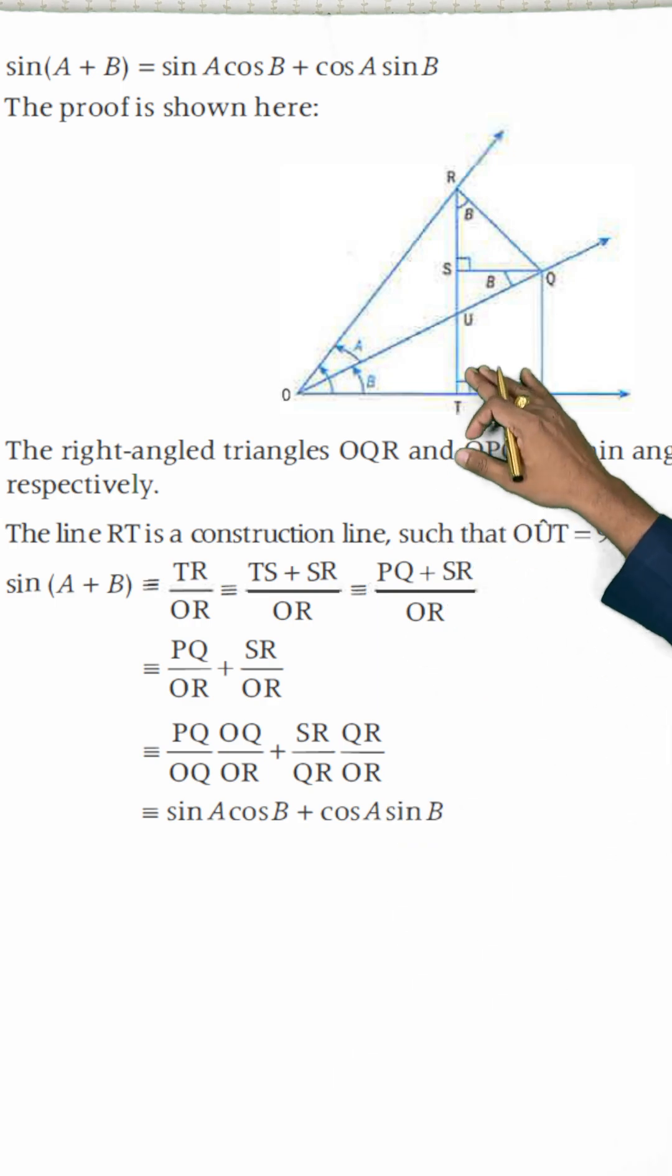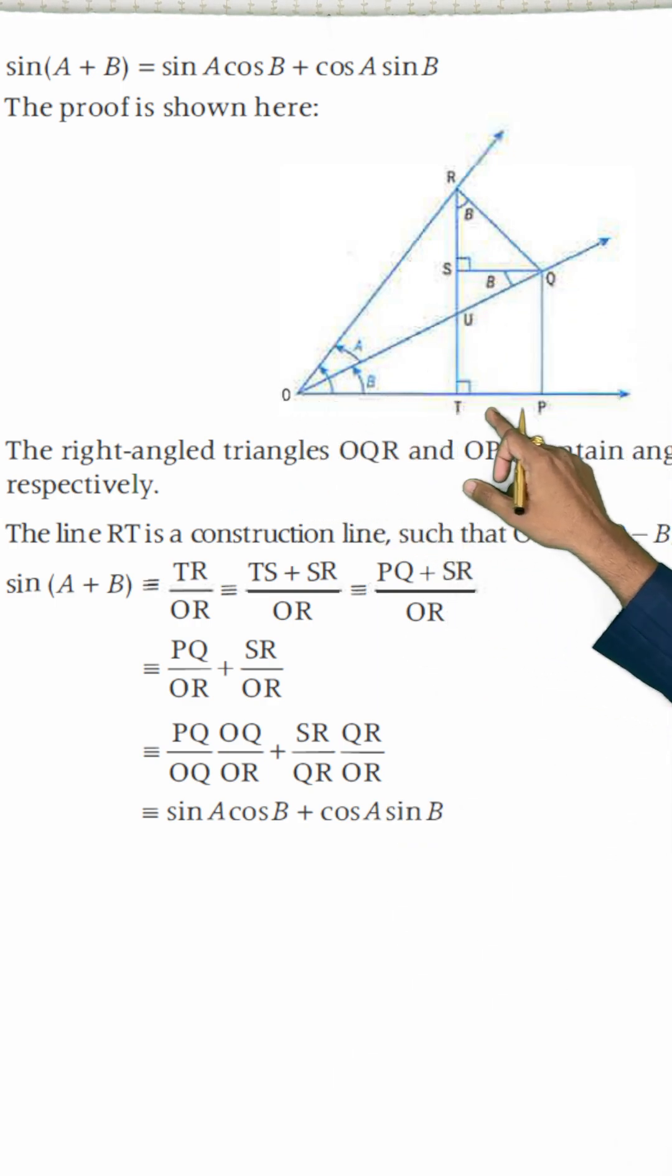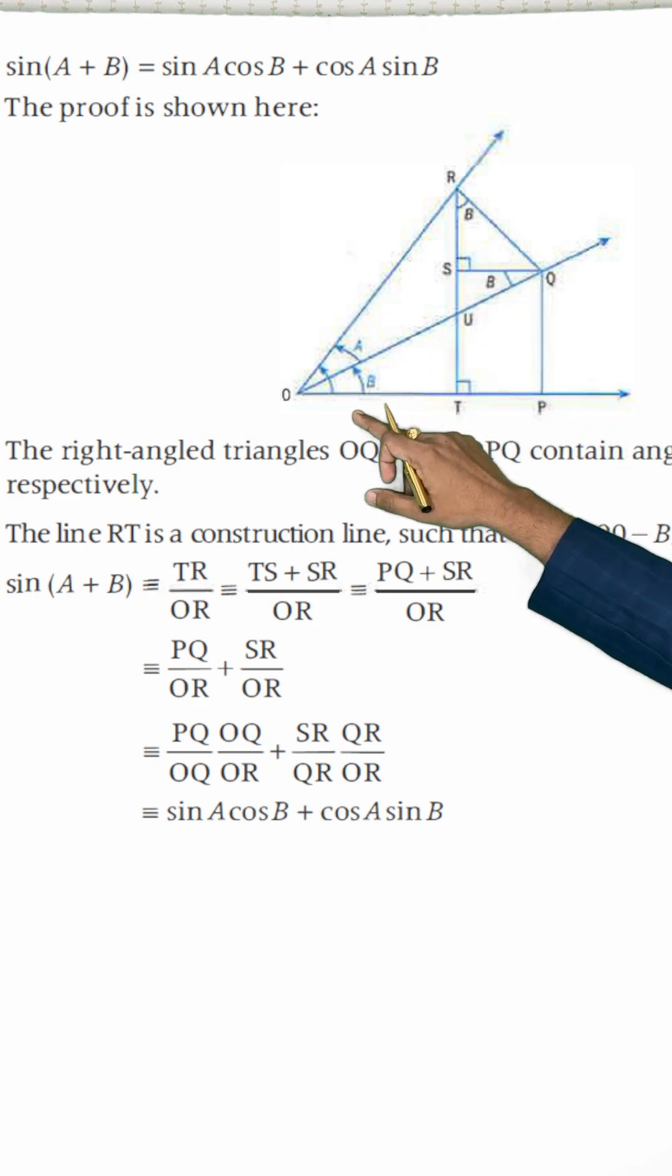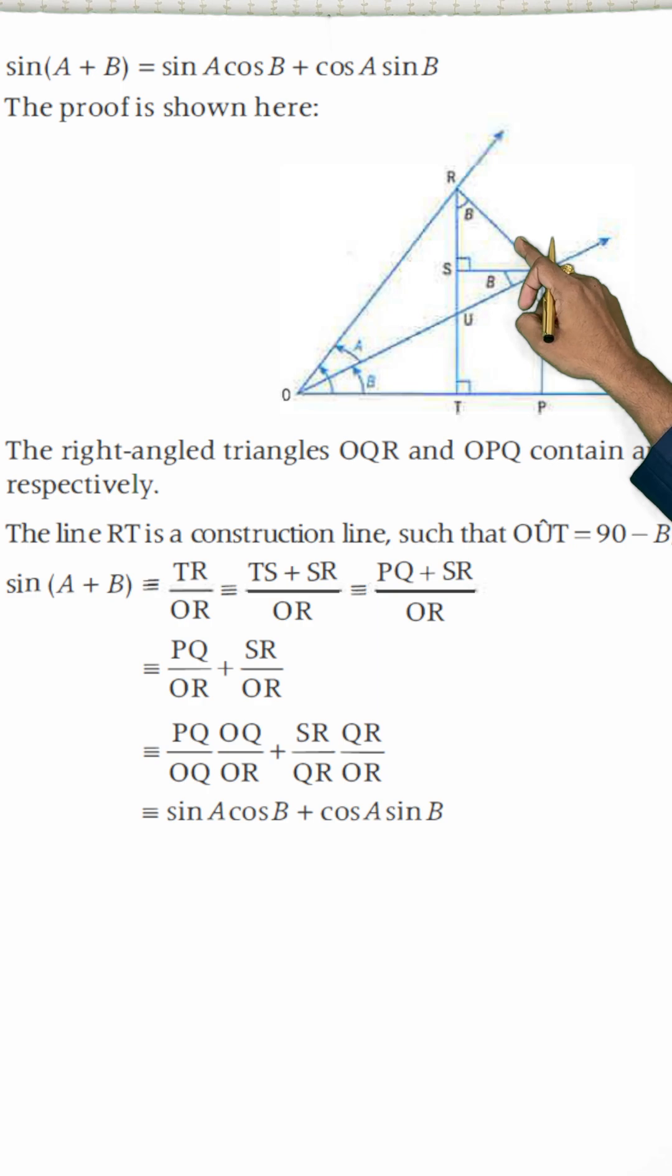Now, once again, if I tell you, you can see SQ is parallel to OP. Since these are two parallel lines, this angle must be equal to this angle, because this is an alternate angle. Similarly, if you see this triangle, this is also a right angle triangle. This total angle is 90 degrees and this is B. And definitely, this angle also will be B.